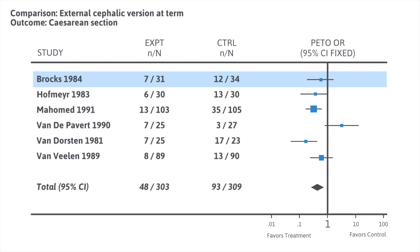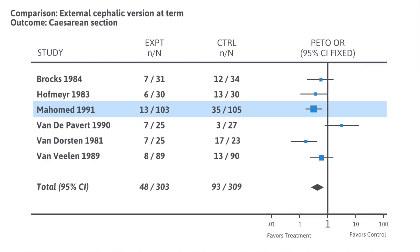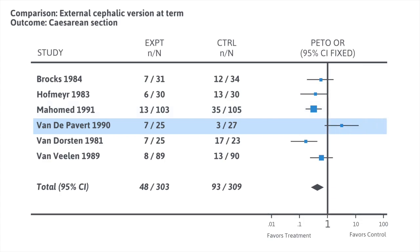In contrast, the third study down has both the upper and lower ends of the wings to the left of one, meaning that study was statistically significant and clearly favored that external cephalic version resulted in a lower risk of cesarean section. The fourth study is the only one where the blue square is to the right of the center line, indicating an increased risk of cesarean section in women who underwent external cephalic version at term — a result we would call heterogeneous with the other studies.